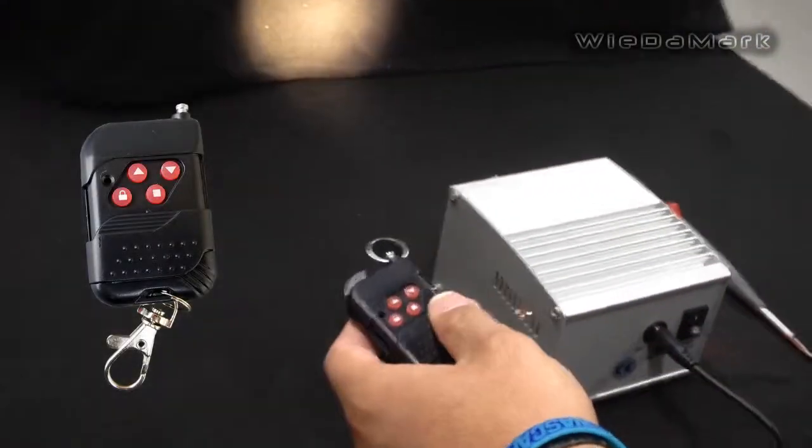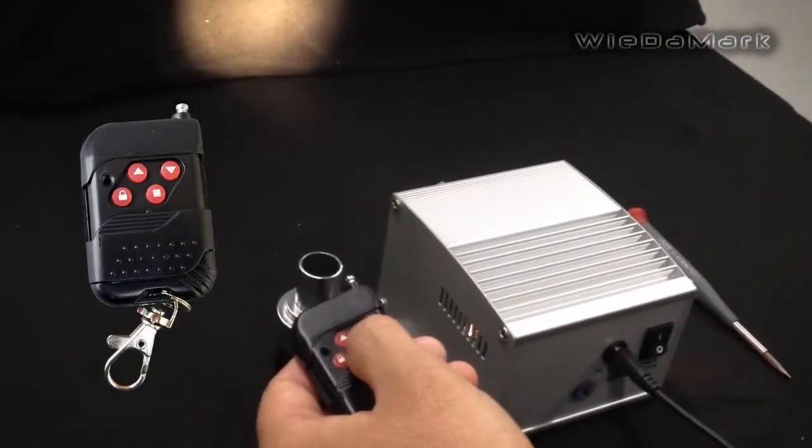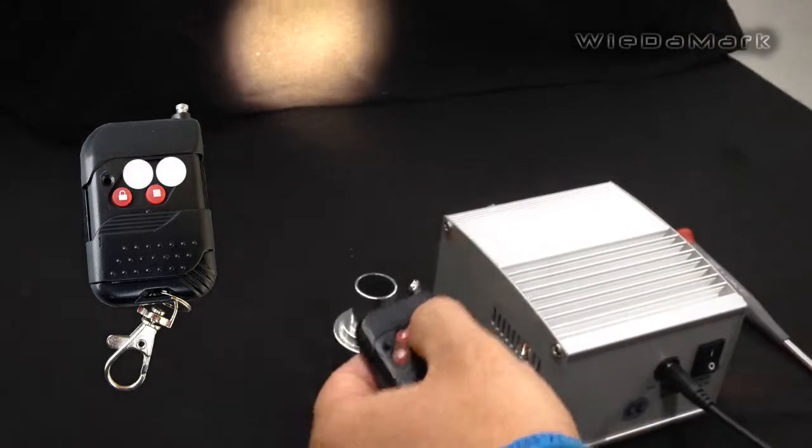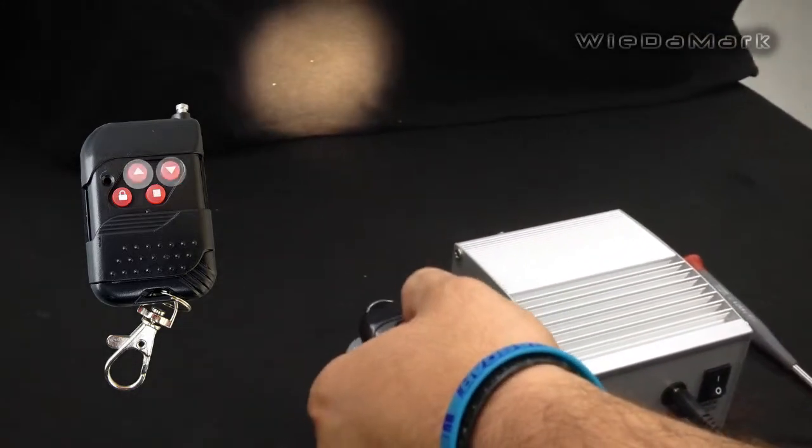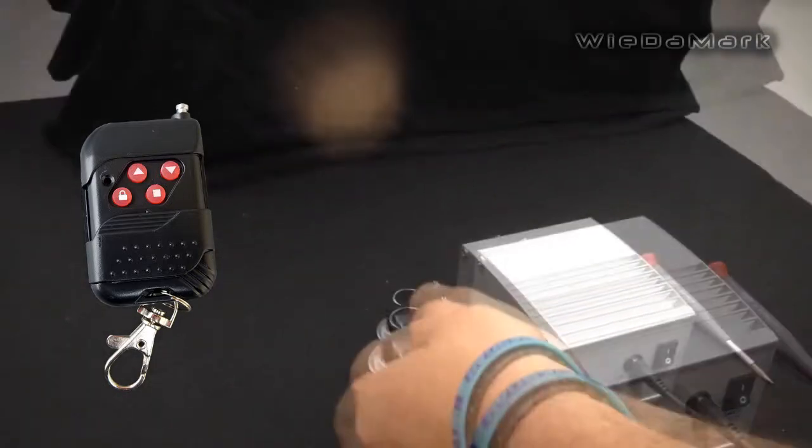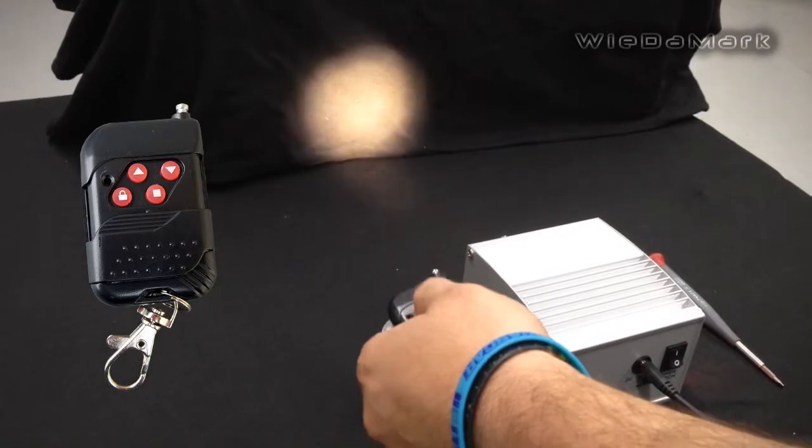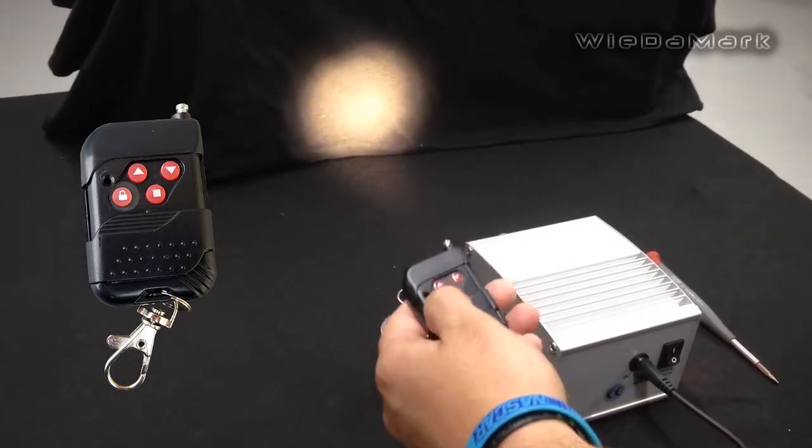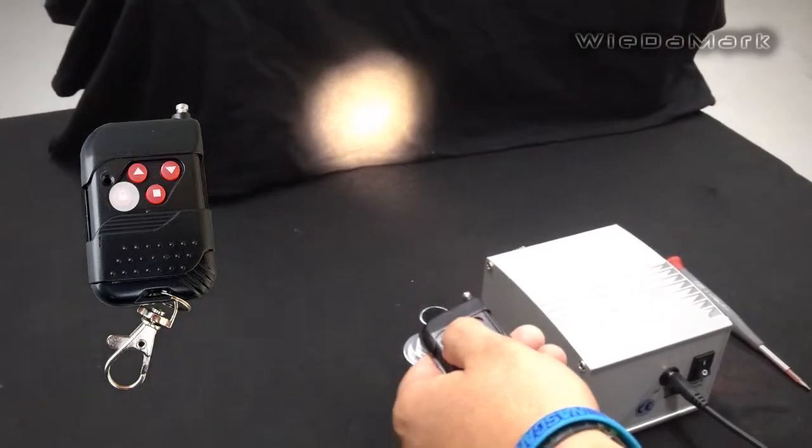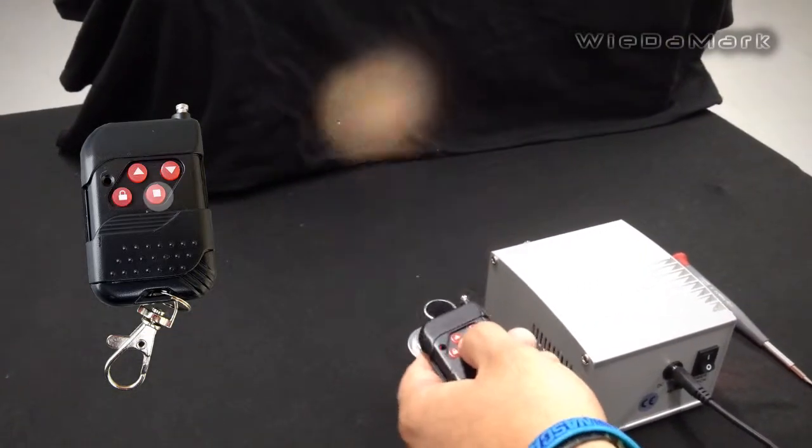The remote will allow you to dim the unit. You can push the up and down to dim and brighten the unit. It's got seven dimming effects all the way to off. You can also pause the wheel and you can turn it on and off.